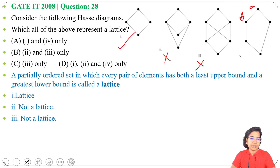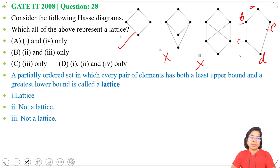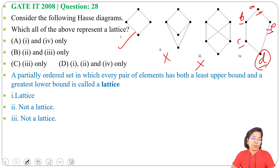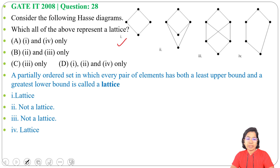Now the fourth diagram. Label the nodes a, b, c, d, e. Check the incomparable pair b and e: the least upper bound is a and the greatest lower bound is d. For c and e: the least upper bound is a and the greatest lower bound is d — it meets at d and joins at a. Since we can find join and meet for every pair, the fourth Hasse diagram is a lattice.